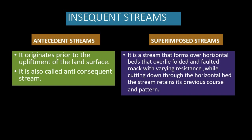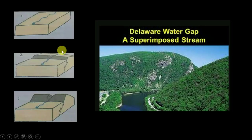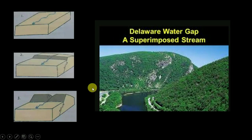A superimposed drainage is formed when the nature and characteristics of the valley and floor direction of a consequent stream develop on an upper geological formation, and its structure is superimposed on a lower geological formation of entirely different characteristics. So, a superimposed drainage system is one where a river follows a particular geological structure, and when sudden upliftment happens, the river continues following the same course despite a different geological or lithological structure underneath it. The Delaware Water Gap is an example of this.